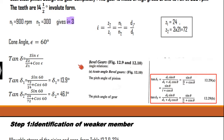In order to calculate the formative number of teeth, we need the values of delta. Delta can be obtained using the equations for the acute angle bevel gear. Tan delta 1 equals d1 sin theta divided by d2 plus d1 cos theta. This is given in the data handbook, equation number 12.29a. Using this equation, we can easily calculate the values of delta 1 and delta 2.